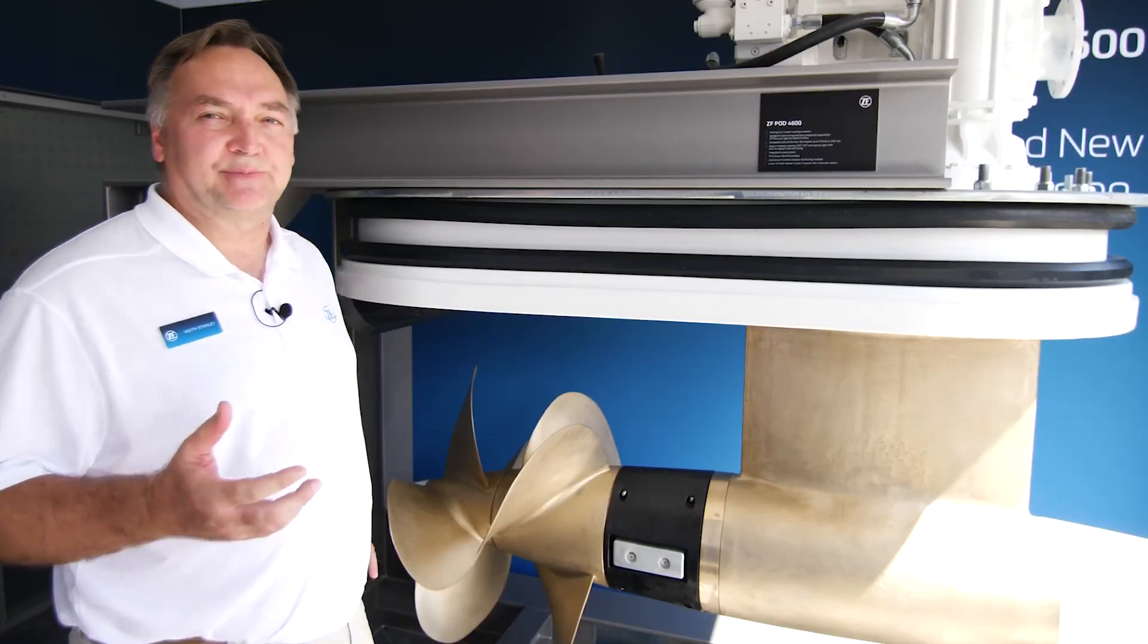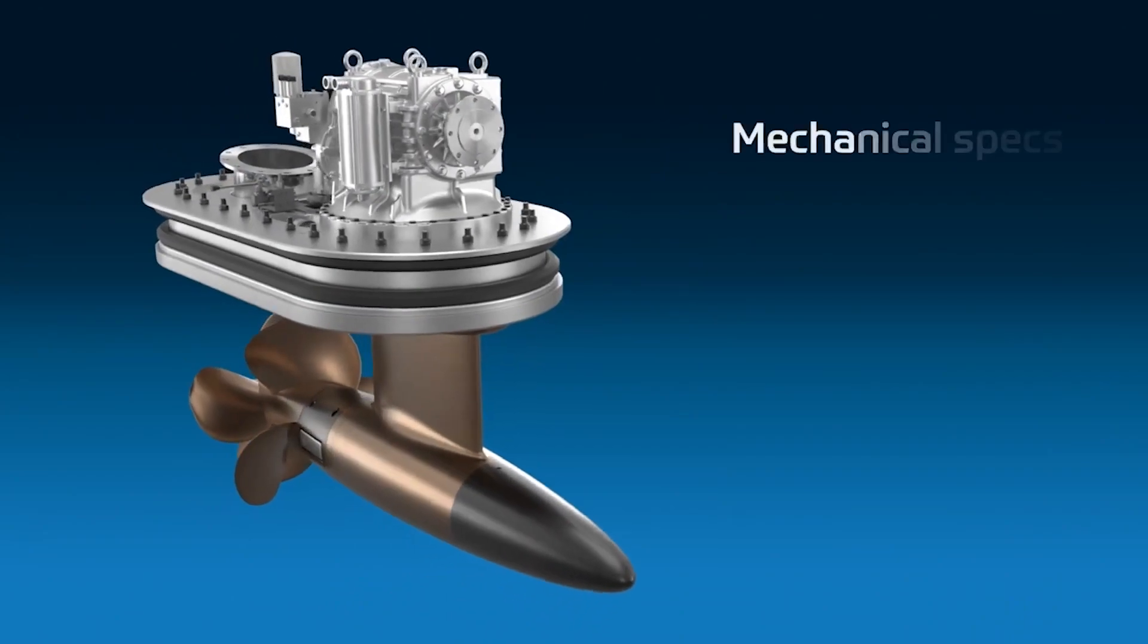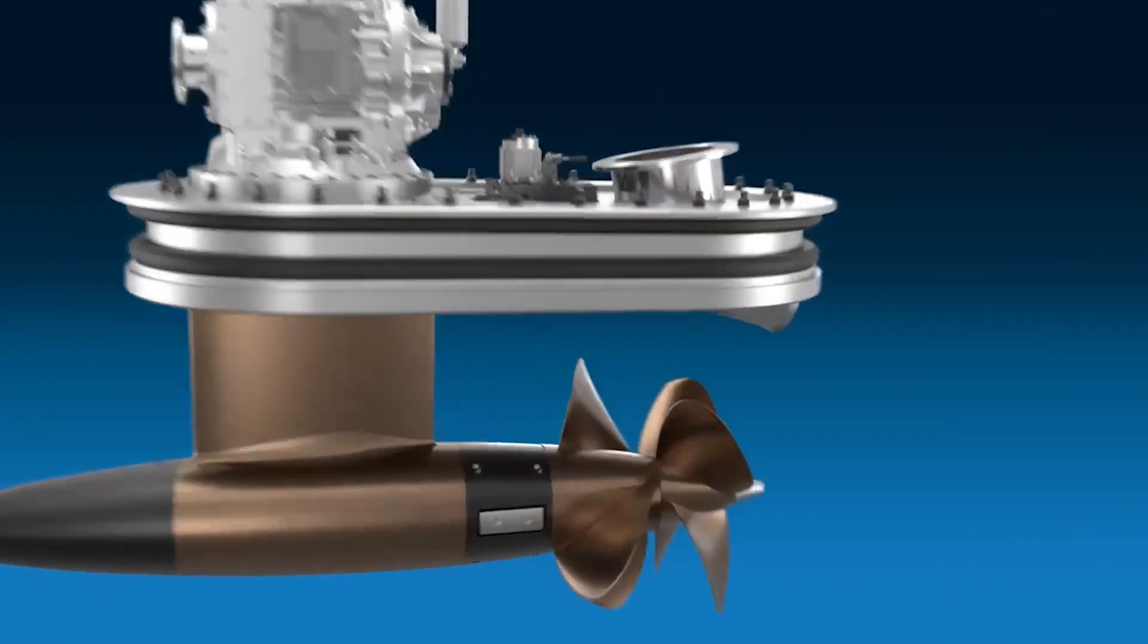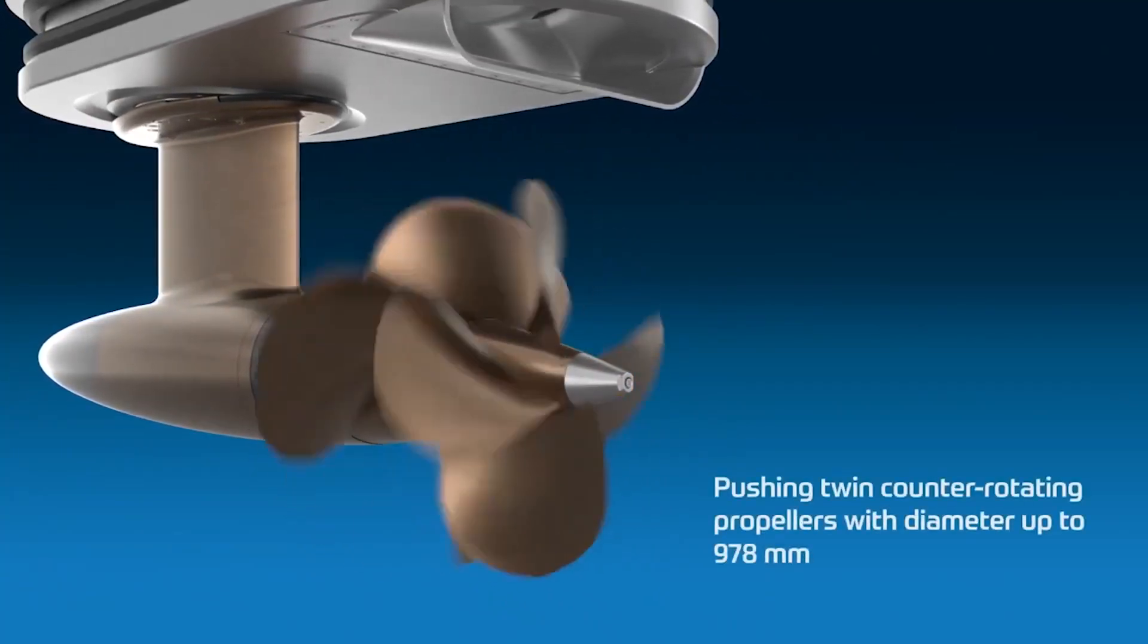The first question we get is typically how much power does this accommodate? On the input side 1,700 horsepower and that power is absorbed through constant rotating propellers approaching 38 and a half inches in diameter.